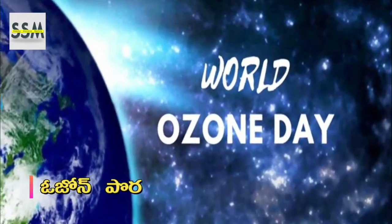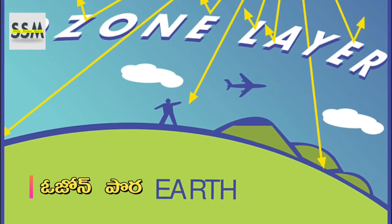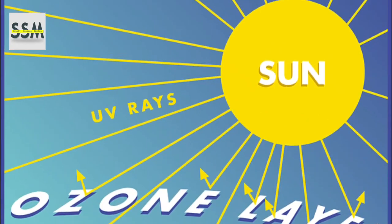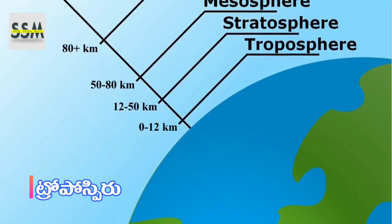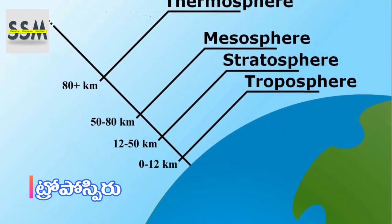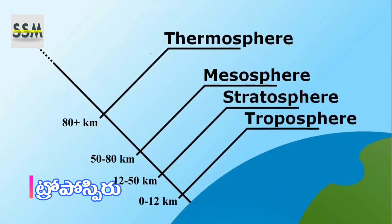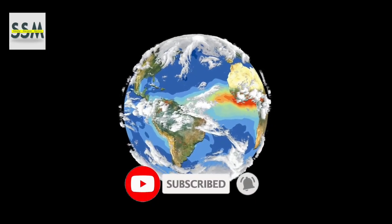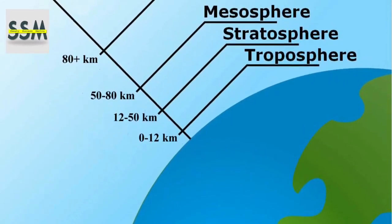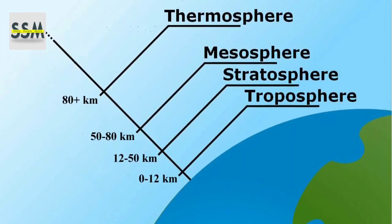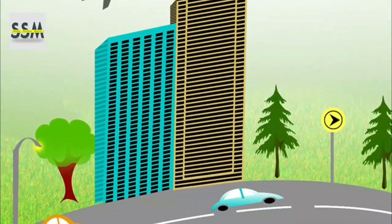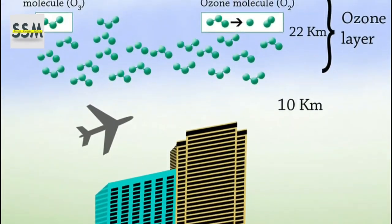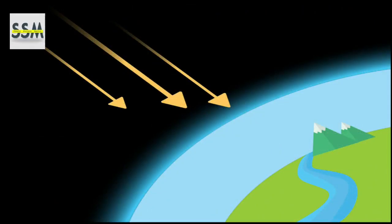Hello friends, in this video I am going to tell you about the atmosphere layers. The troposphere extends to about 10 km. The toposphere is about 9 to 10 km. This is the stratosphere. This layer extends to about 100 km.